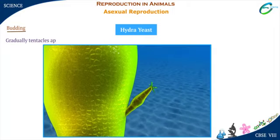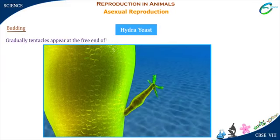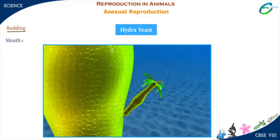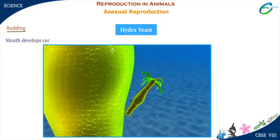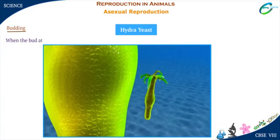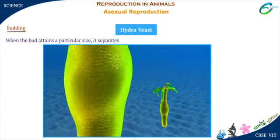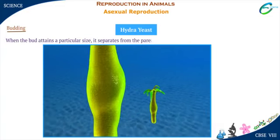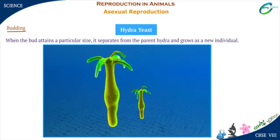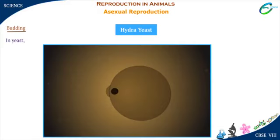Gradually, tentacles appear at the free end of the bud. A mouth develops centrally. When the bud attains a particular size, it separates from the parent hydra and grows as a new individual. In yeast, a small outgrowth — a bud — appears on the parent yeast.